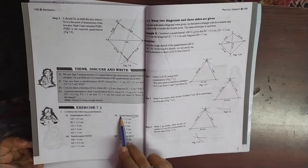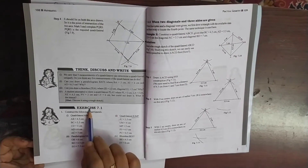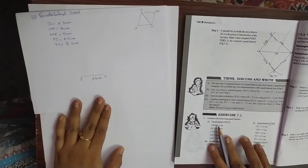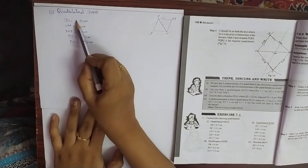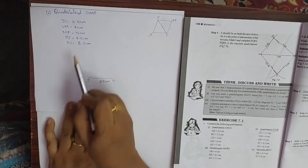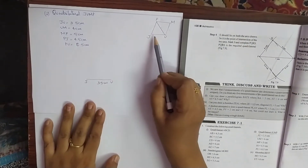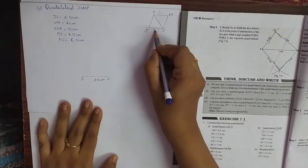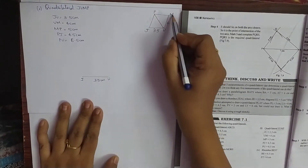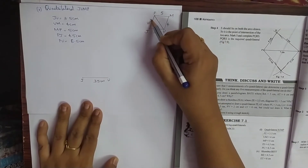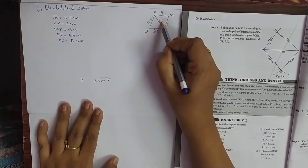Let's move on to the second problem. Quadrilateral J, U, M, P with the given measurements from exercise 7.1: JU is 3.5, UM is 4, MP is 5, PJ is 4.5, and PU is 6.5. So we will draw the quadrilateral and name it as J, U, M, P with those measurements.